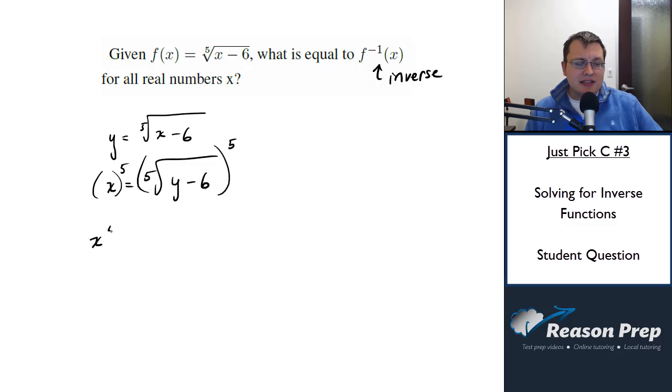And when I do that, I get x to the fifth is equal to y minus 6 because the fifth root raised to the fifth power will cancel. Next, I'm going to move the 6 over, and I'm going to be left with x to the fifth plus 6.